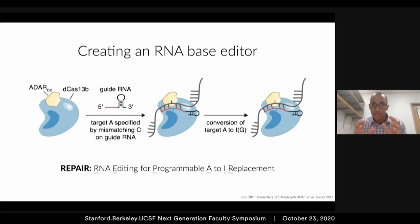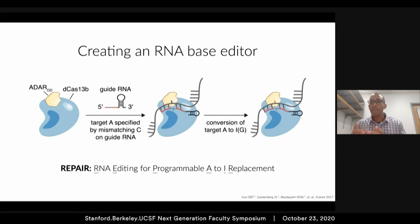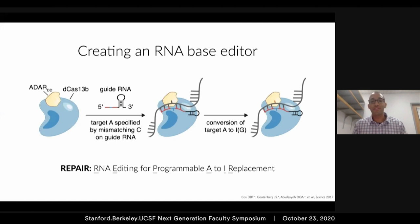So we put it all together like this: we'd have dCas13b, which is a catalytically inactive version of Cas13b, covalently linked to the deaminase domain of the ADAR enzyme. We'd recruit that to a specific transcript using a guide RNA, and because you control the sequence of the guide RNA, you could program in a cytosine to pick out a specific adenosine to deaminate. The guide RNA would also serve to make that part of the transcript duplexed so that ADAR can carry out its function on double-stranded RNA. If this all works, you get conversion of a target adenosine to inosine, which is treated by the cell as guanosine. Since everything in the CRISPR field must have an acronym, we named our system RNA Editing for Programmable A-to-I Replacement, also known as REPAIR.